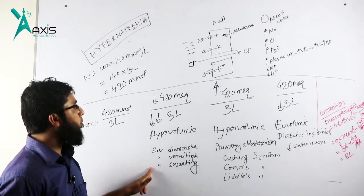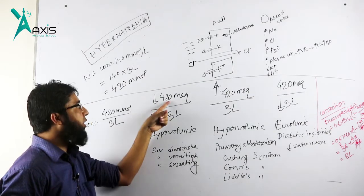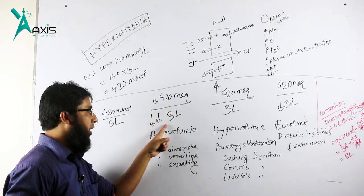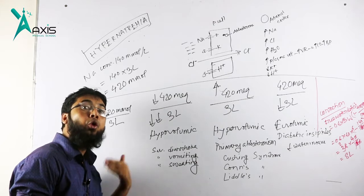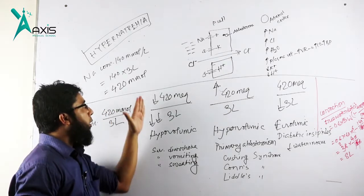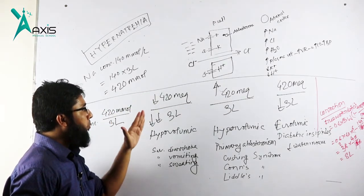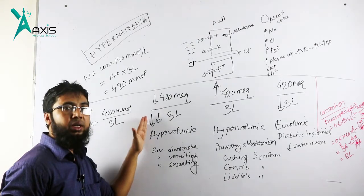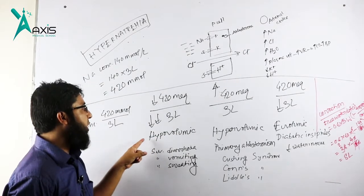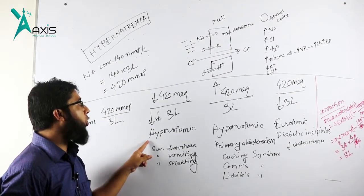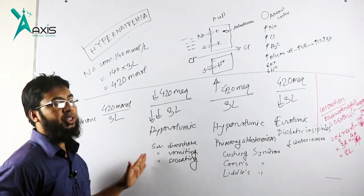What happens? There is reduction of sodium, but water is reduced more than sodium. Sodium decreases, fluid decreases, but sodium compared to fluid decreases much more. This is what we call hypovolemic hypernatremia.